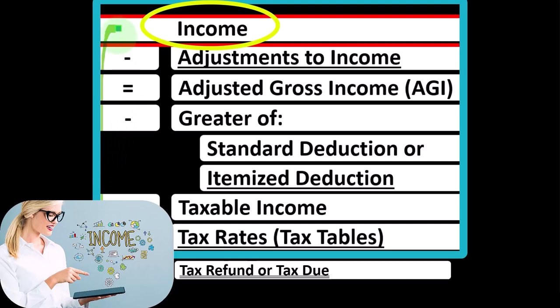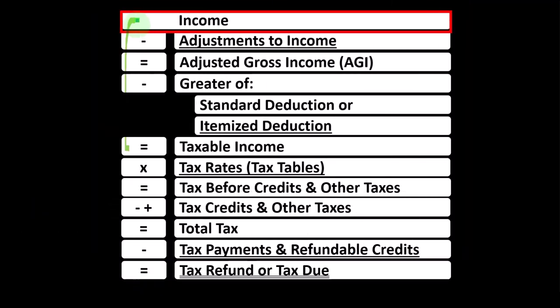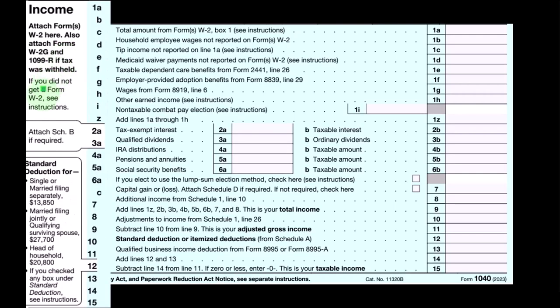When looking at the income line item, we typically want it as low as possible for taxes, therefore looking for things that might be exempt from having to include in income. Also noting that there could be some items included in income which could have favorable tax rates other than being taxed at ordinary income — examples being qualified dividends and possibly long-term capital gains.